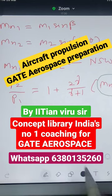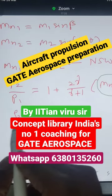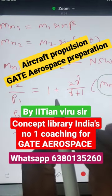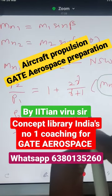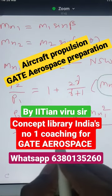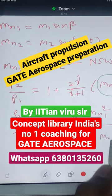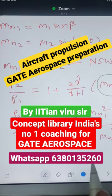In the same way you will write your density ratio: rho 2 by rho 1 equals gamma plus 1 by 2 Mn1 squared, whole divided by 1 plus gamma minus 1 by 2 Mn1 squared. This is your density ratio.